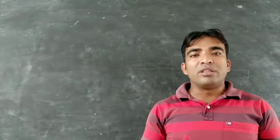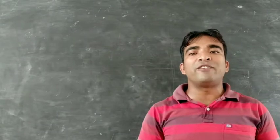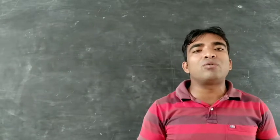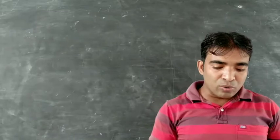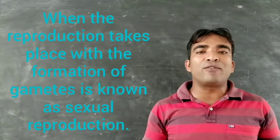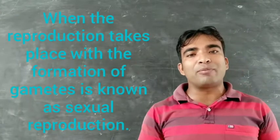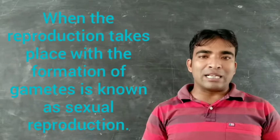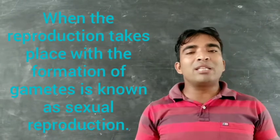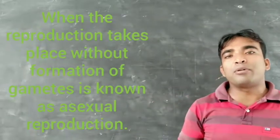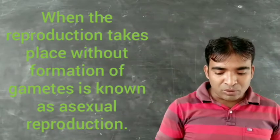Now I will discuss about the modes of reproduction. Just like in plants, in animals also there are two different types of reproduction. First one is known as sexual reproduction and the other one is known as asexual reproduction. Sexual reproduction is the mode in which gamete formation takes place. Asexual reproduction is where reproduction takes place without the formation of gametes.